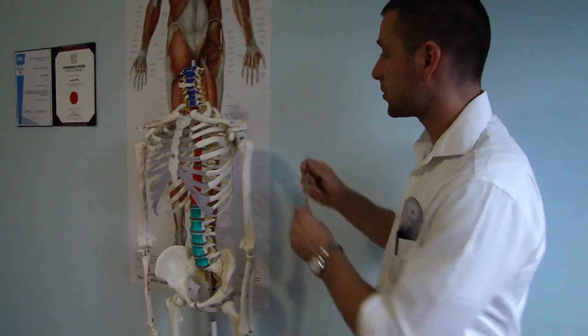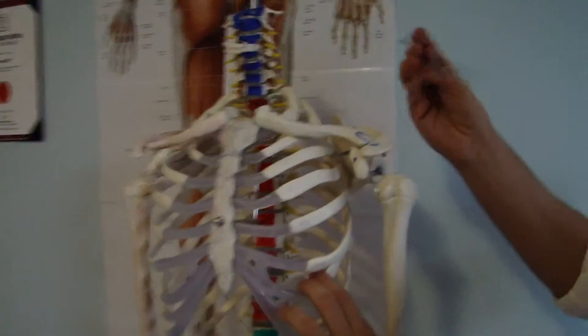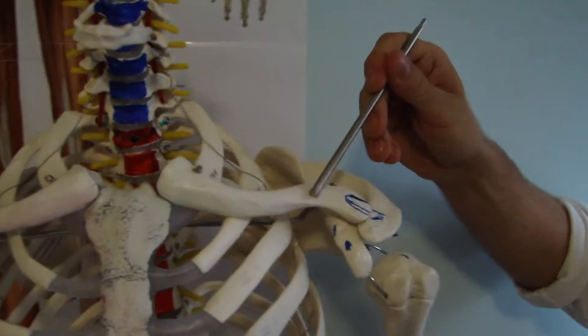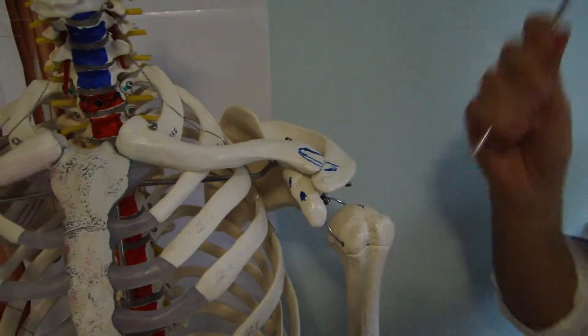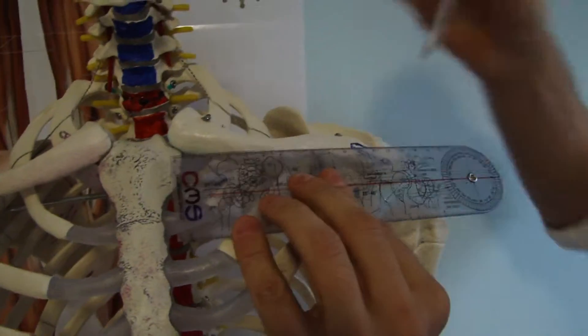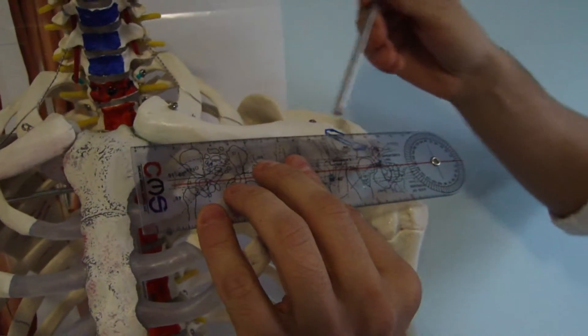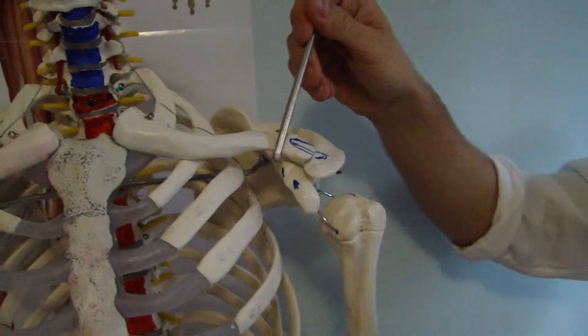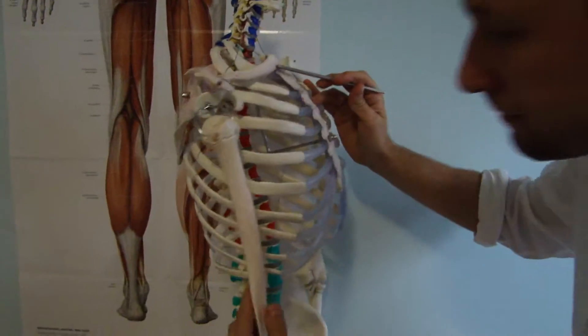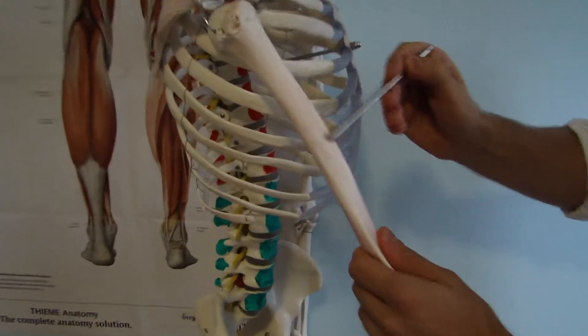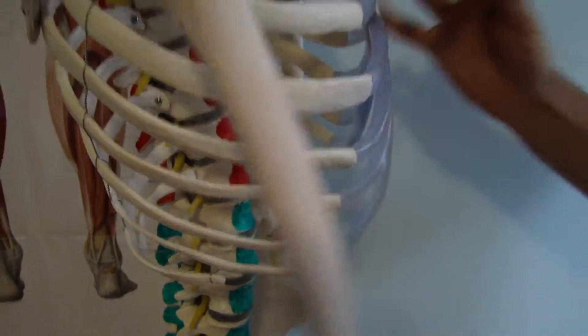So if we focus on pars clavicularis of the deltoid muscle, it's over here. This is the anterior surface and lateral one-third. We can divide the clavicle into three thirds and then the last third is the origin of deltoid. And then insertion is on deltoid tuberosity of humerus.